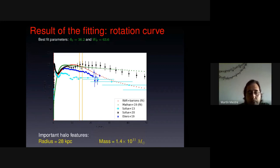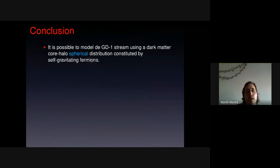Some important halo features. The radius is 28 kiloparsecs and the mass is 1.4 times 10 to the 11 solar masses. So we have a very small and light dark halo compared to other feeds in the literature.